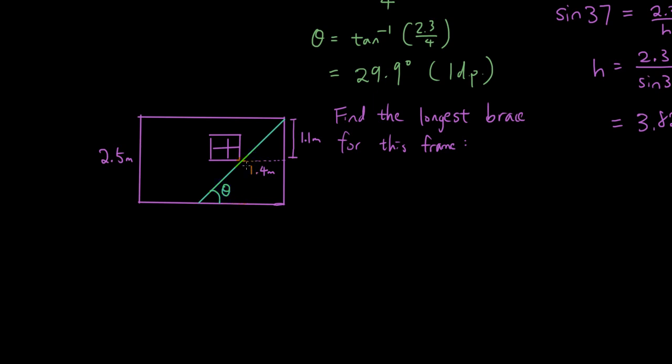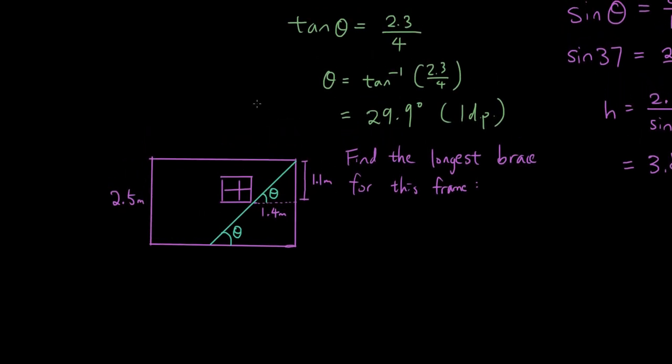Now this angle is actually the same size as this angle using a geometry rule that you would have learnt from earlier years of school. If you had a pair of parallel lines and you had a diagonal line going through the pair of parallel lines, then the angle at the same position must be equal. It's called corresponding angles are equal.